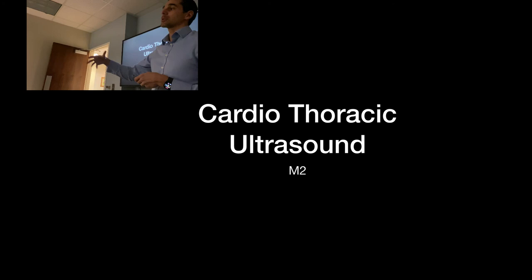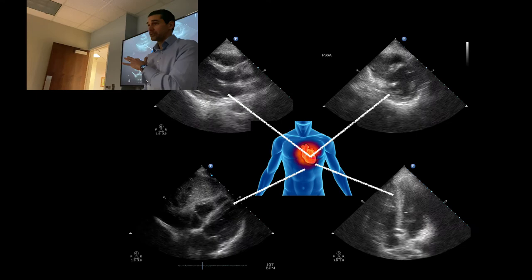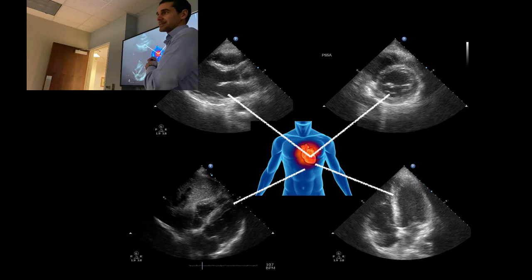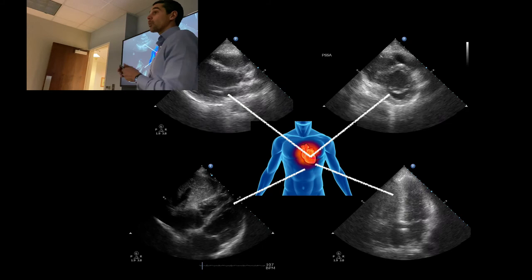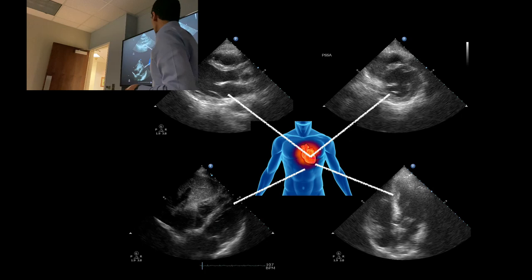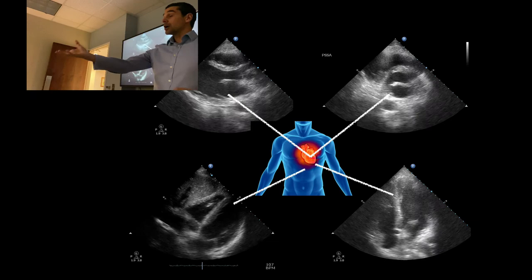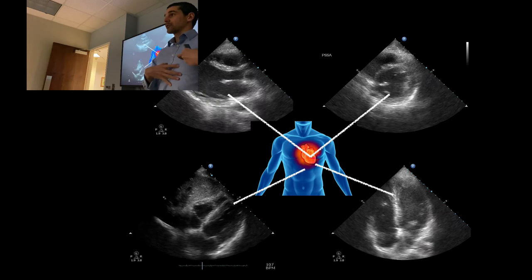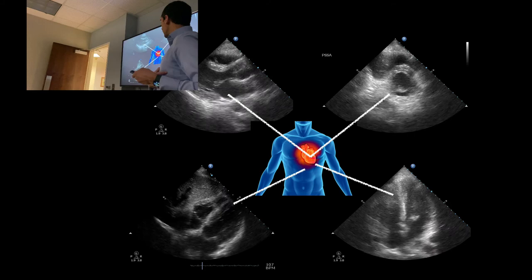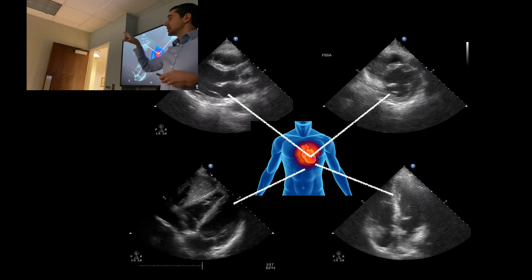Let's go through the views. You went through the four views — the powerpoint on the four different views. Why do we need four views? What's the advantage of having four different views of the heart? To see different structures. The heart is three-dimensional, so anytime we're ultrasounding it we're creating a two-dimensional moving image of a three-dimensional structure.